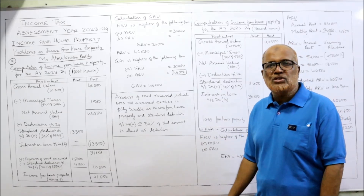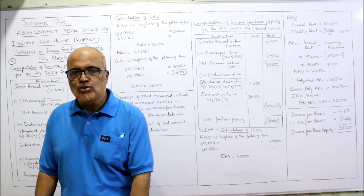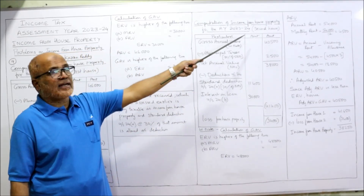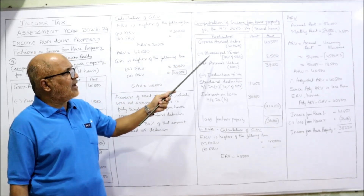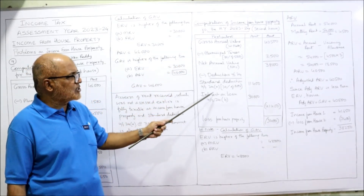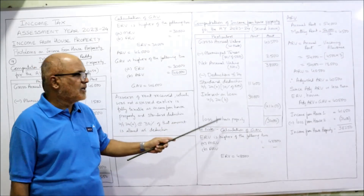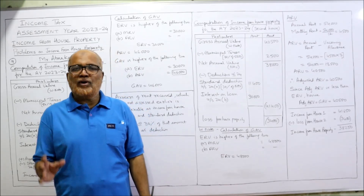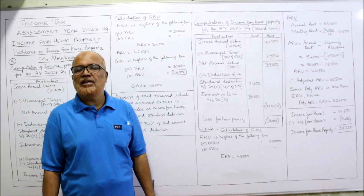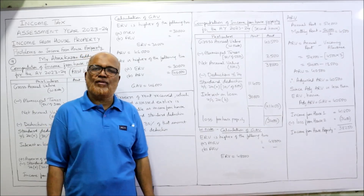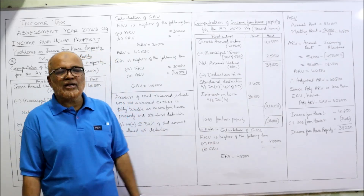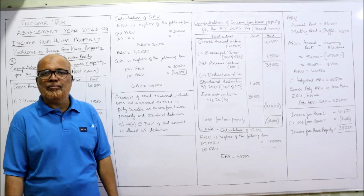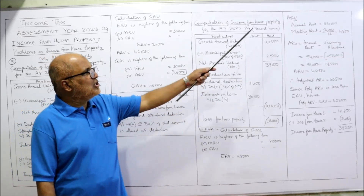The first house computation is completed. Now moving to the second house. The same format is followed: Gross Annual Value less municipal taxes gives Net Annual Value (NAV), less deductions gives income or loss. First, we calculate the Gross Annual Value. ERV is the higher of MRV and FRV. MRV is 48,000; FRV is not given, so ERV is 48,000.